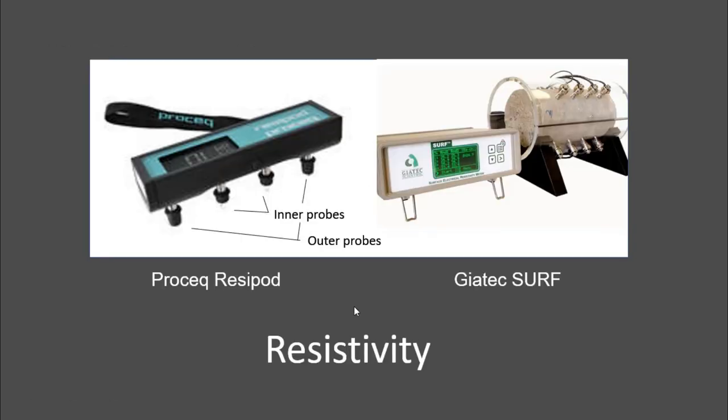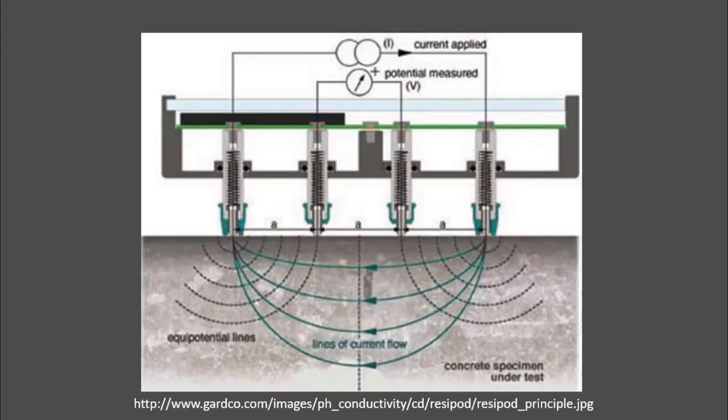And one of the great ways to do that is with resistivity. I'm showing two different commercially available devices here that can measure resistivity and they're pretty simple. You put them on the concrete and there's a current that's sent from one side to another and you actually measure the potential or the voltage across the middle two probes.